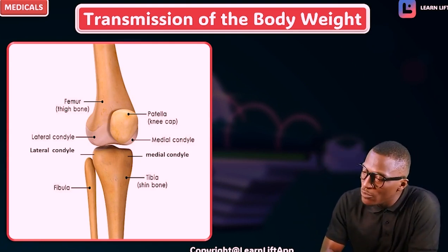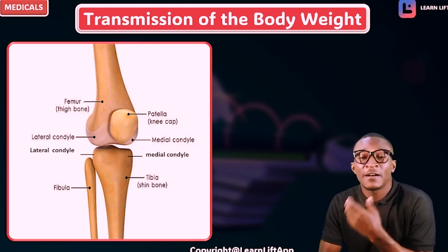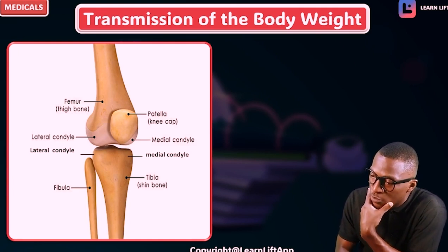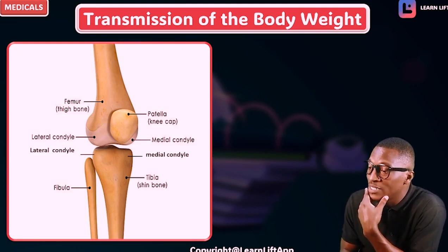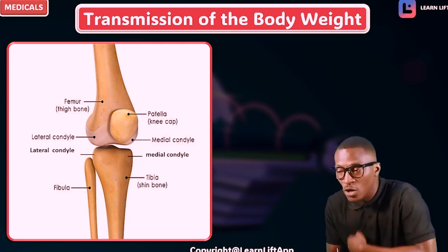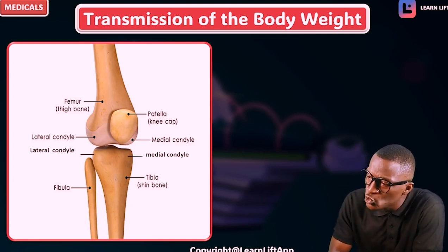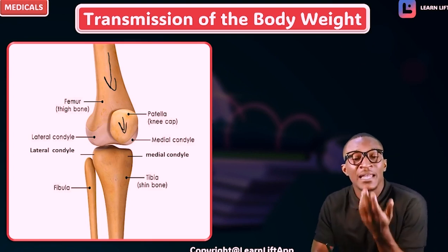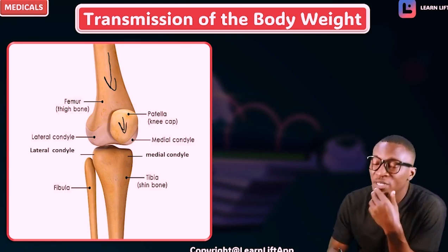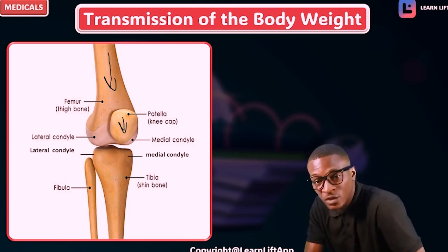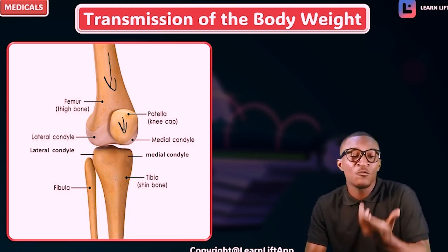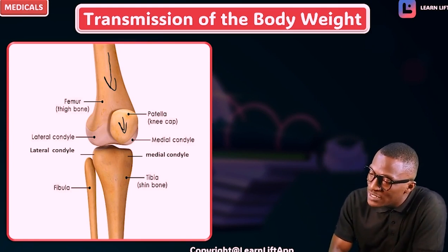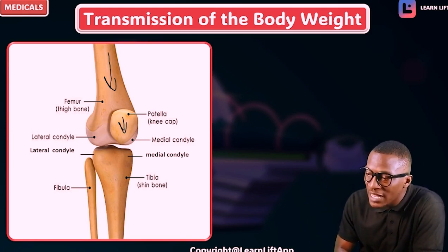This is the femur — specifically the distal femur. You can see the lateral condyle and the medial condyle of the femur. The weight continues through the femur and moves to the patella, also called the knee bone. The patella is the largest sesamoid bone. From the distal femur, the weight moves to the patella, and from the patella it moves to the tibia, also called the shin bone.